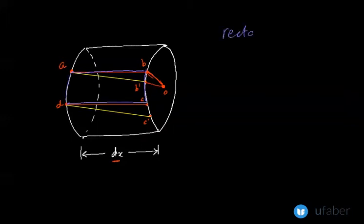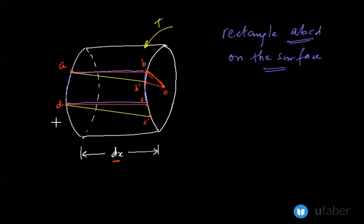This element is a rectangular element, and this element is lying on the surface of the bar. Now, because this is being subjected to a twisting moment, it will twist. So this point will shift to B dash and point C will shift to C dash. A and D cannot move because they are part of the fixed end. So this rectangle is now of a shape like this.